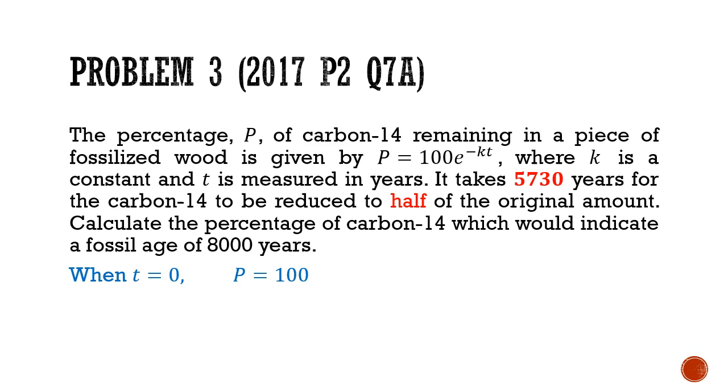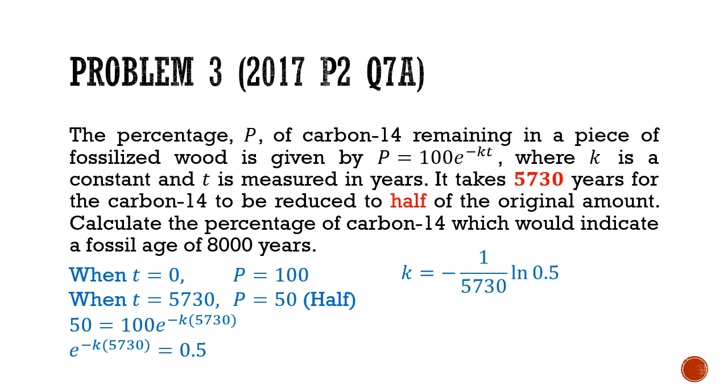So initially, at t equals 0, you have 100% of the carbon-14 content. But after 5730 years, it's half, so p is equal to 50. So we substitute p equals 50 and t equals 5730 into the formula. We get this. We divide both sides by 100. Then we make k the subject. So I'm not going to evaluate this. Instead, I'm going to substitute this into the original formula together with t equals 8,000, because we want to see the percentage after 8,000 years. So I'll get p equals 100 times e to the power of 8,000 over 5730 times ln of 0.5. And I key this one shot into the calculator. I'll get 37.993. This tells me that the percentage of carbon-14 will be 38.0% to 3sf. And that's our final answer.